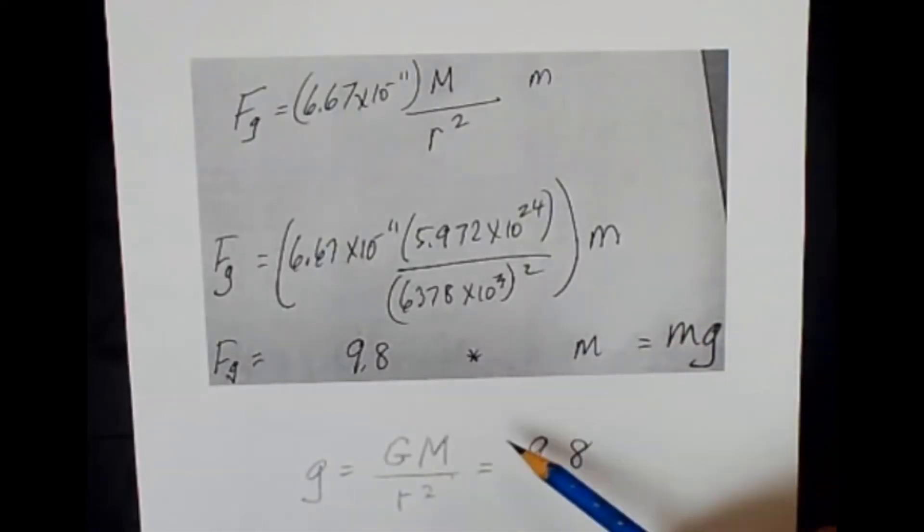So what we've shown then is that G times m over r squared on the surface of the planet Earth is 9.8.